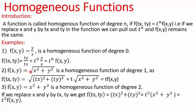In the second example, f(x,y) = √(x²+y²). Replacing x and y by tx and ty, we get t times √(x²+y²), which is t · f(x,y). The power of t is 1, so it's a homogeneous function of degree 1. In the third example, f(x,y) = x²+y². Replacing x and y by tx and ty, t² can be pulled out, giving t² · f(x,y). As the power of t is 2, it's a homogeneous function of degree 2.